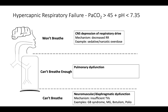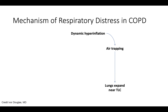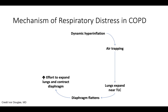'Can't breathe enough' represents the pulmonary causes of hypercapnic respiratory failure, defined by impaired gas exchange with overwhelmed respiratory mechanics. The two most common causes are COPD and asthma exacerbations. COPD exacerbations start with dynamic hyperinflation triggered by infection, medication noncompliance, PE, etc. Dynamic hyperinflation leads to air trapping, the lungs expand close to total lung capacity, and diaphragmatic flattening occurs. As the diaphragm flattens, more effort is required to expand the lungs further, leading to smaller tidal volumes, which causes PCO2 to increase and pH to decrease — and only worsens the dynamic hyperinflation.